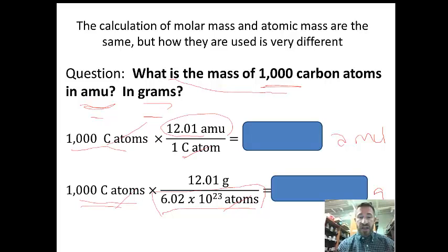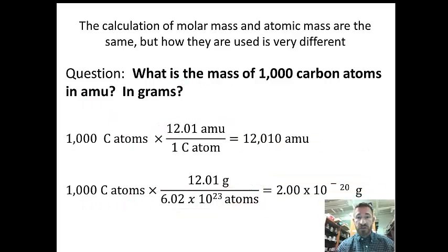With these answers, hopefully you got 12,010 AMUs. That's the mass of 1,000 carbon atoms in AMUs. And 1,000 carbon atoms in grams would be, notice for both these, carbon atoms are canceling.